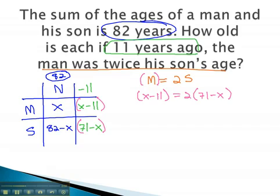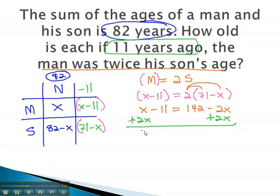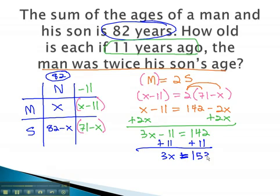This gives us an equation we can quickly solve for x. Start by distributing the 2 to get x minus 11 equals 142 minus 2x. Finally, get the variable to one side by adding 2x to both. 3x minus 11 equals 142. Adding 11 to both sides gives us 3x equals 153.